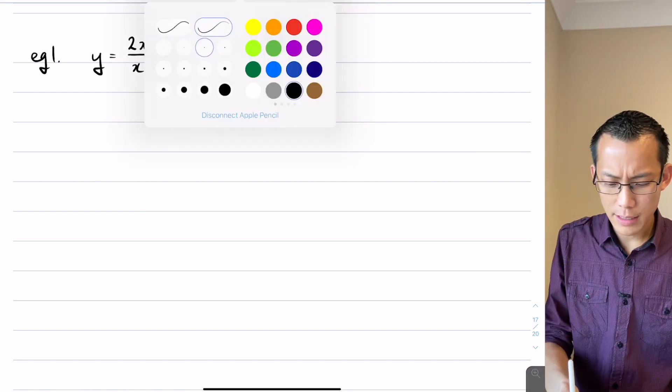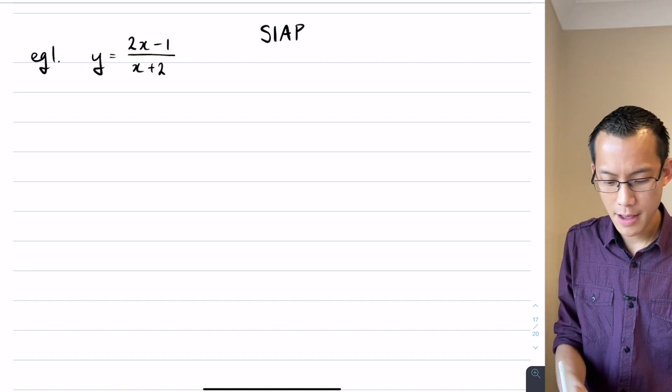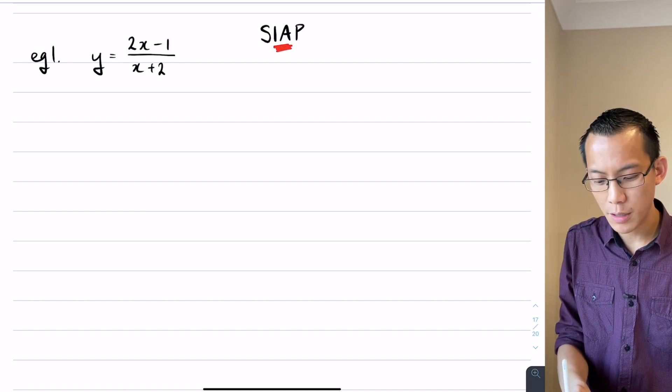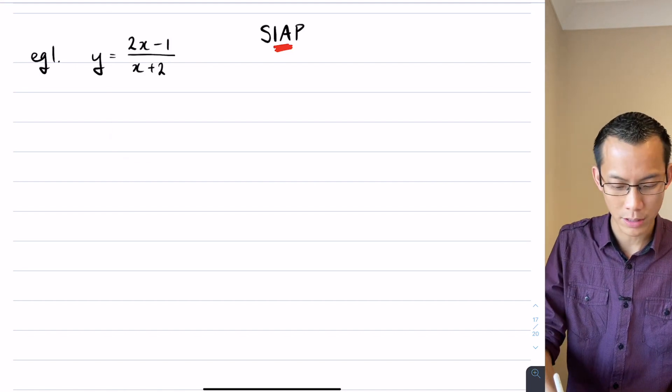Now one of the things that's interesting here, which is different to exponentials and logs like we looked at yesterday, is that the shape is kind of going to be defined by where your intercepts and your asymptotes are. So that's where I'm going to begin.